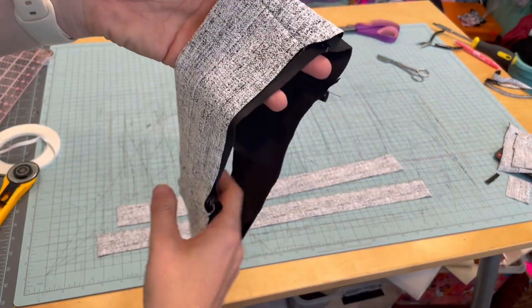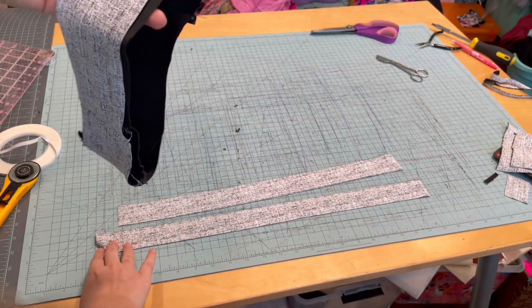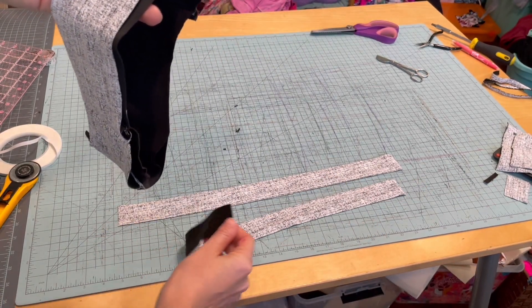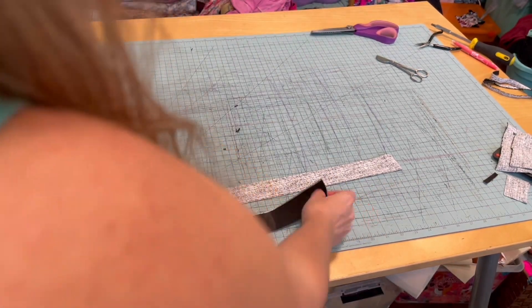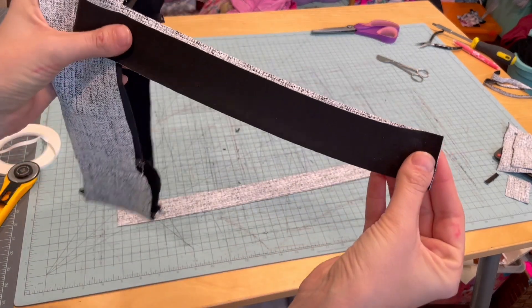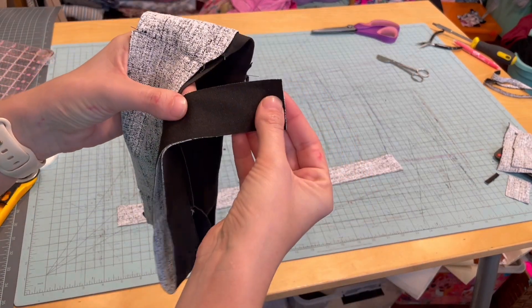The next thing we have to do is put the binding on, and your binding needs to be in two big loops. So sew the ends of those together in a loop, right sides together. We're using 3/8 inch seam allowance on all of these.